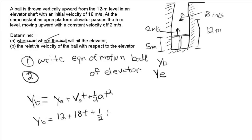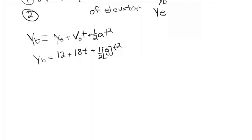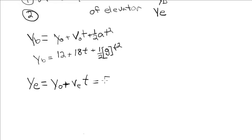The acceleration is due to gravity, which is minus 9.8 meters per second squared. For the elevator, there is no acceleration — it moves at constant velocity — so its equation is just: y sub e equals initial position plus velocity times time. It starts at 5 meters and moves upward, so y sub e equals 5 plus 2t. We'll call upward the positive direction.